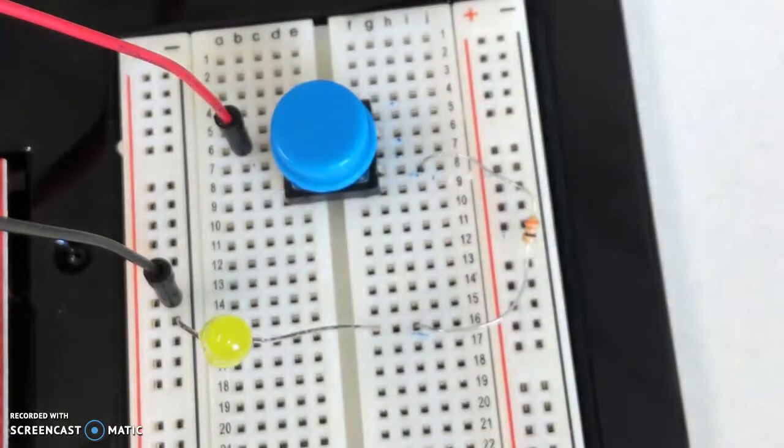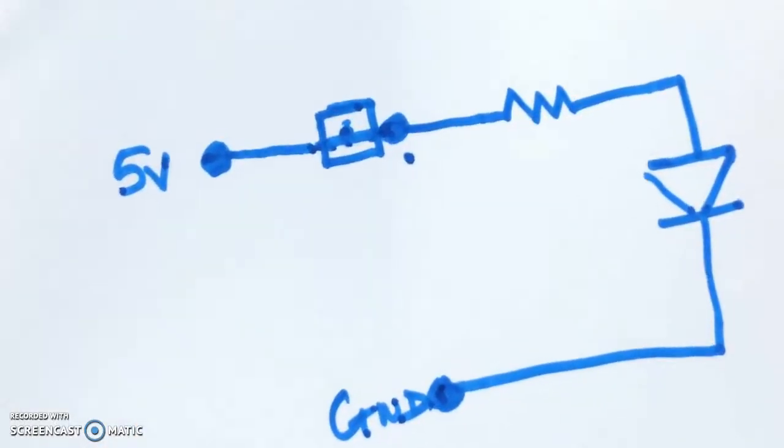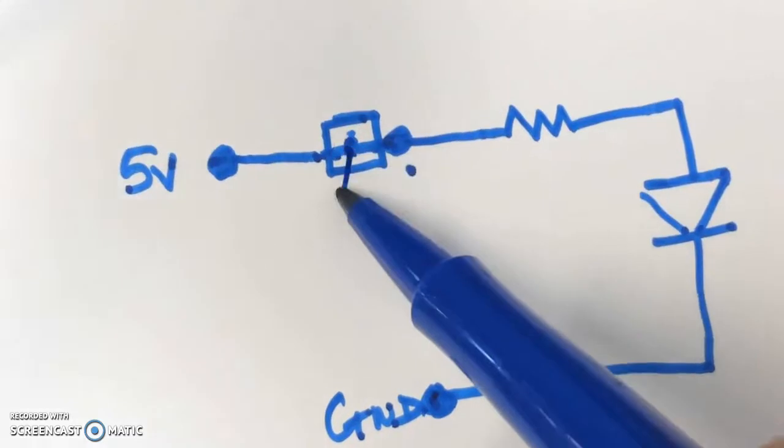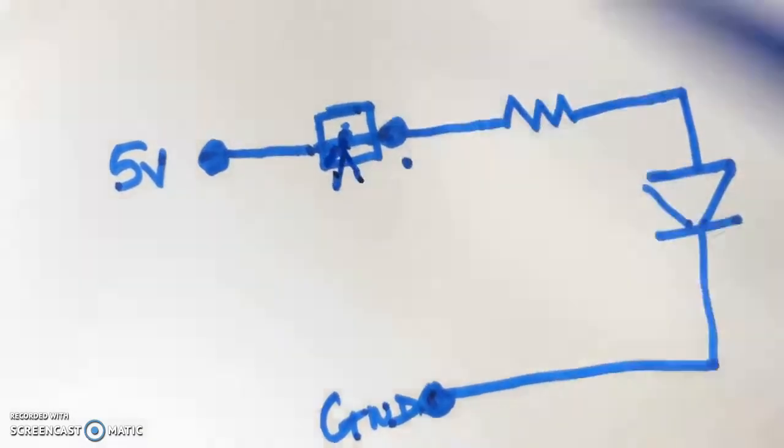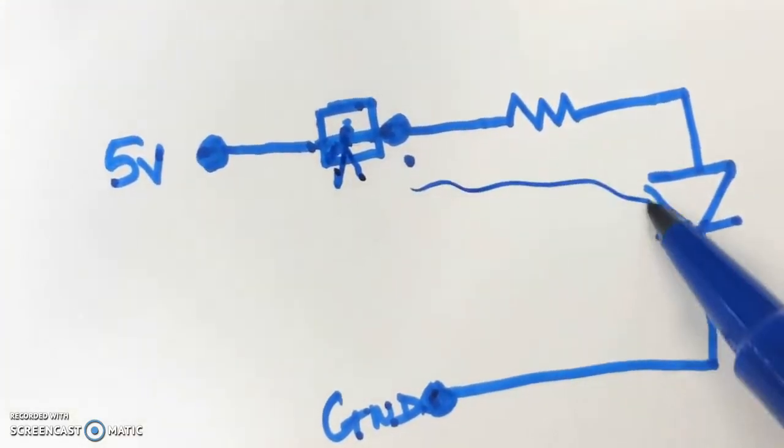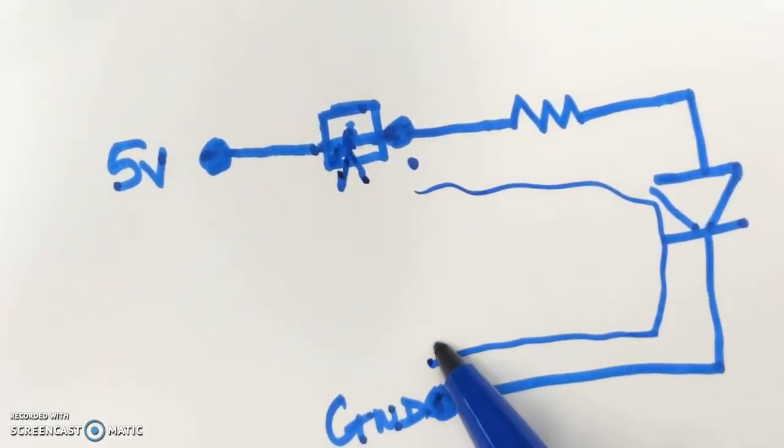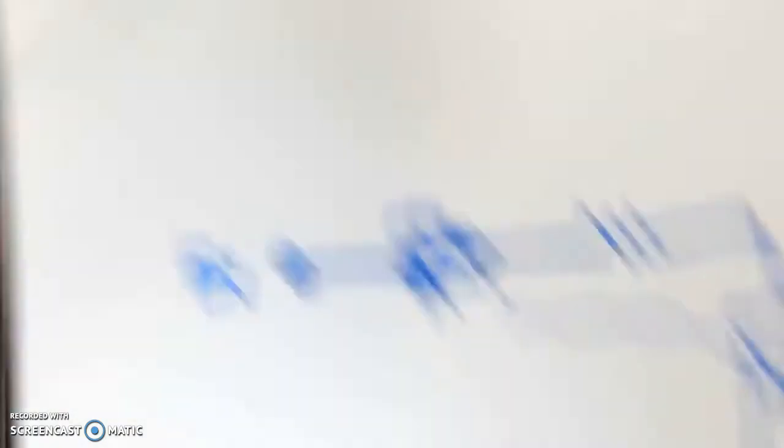Okay, so this is a switch that's placed in the way to either break the connection or make the connection so that the current can actually flow through the LED, go to ground and light up this LED.